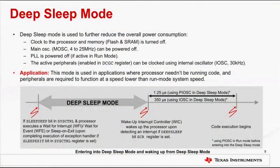That takes us to a discussion on the third mode of operation: deep sleep mode, which is used to further reduce overall power consumption by turning off the clock to the processor and memory — that is, flash and SRAM — along with the main oscillator and PLL. The active peripherals, those enabled in the DCGC register, can be clocked using the internal oscillator. This mode is used in applications where the processor needn't be running code and the peripherals are required to function at a speed slower than the run mode system speed. The device enters deep sleep mode if the sleep-deep bit in the system control register is set and when the processor executes a wait-for-interrupt or wait-for-event instruction, or upon completing an exception handler if the sleep-on-exit bit is set. The device exits deep sleep mode depending upon the mechanism that caused it to enter.